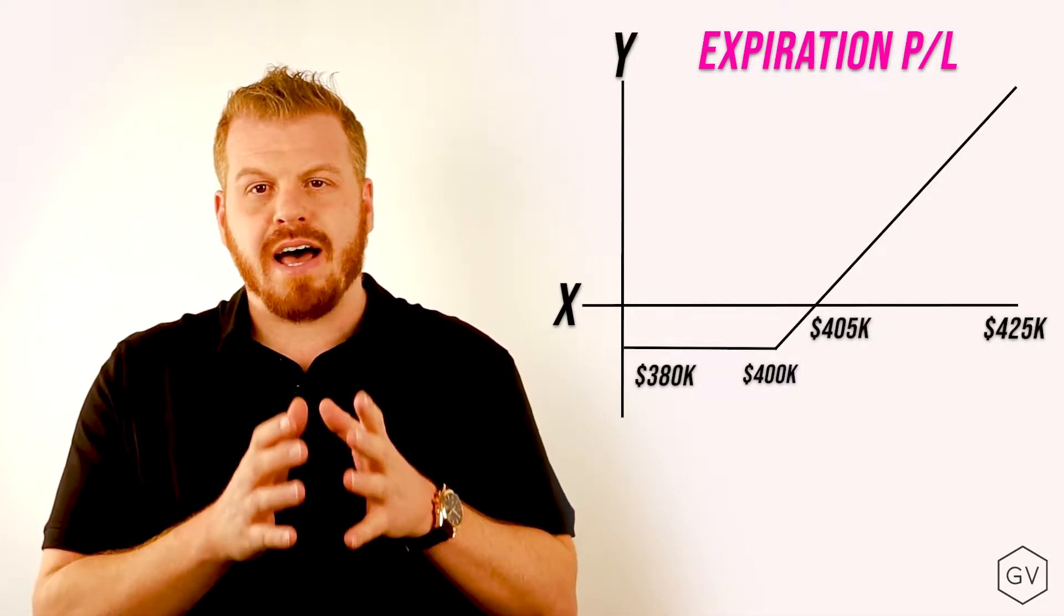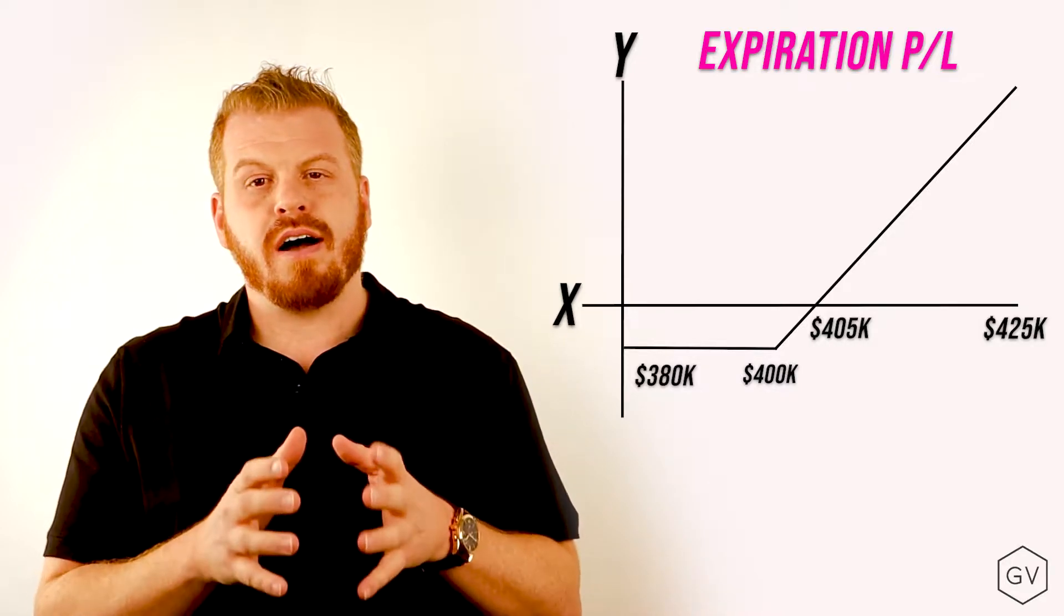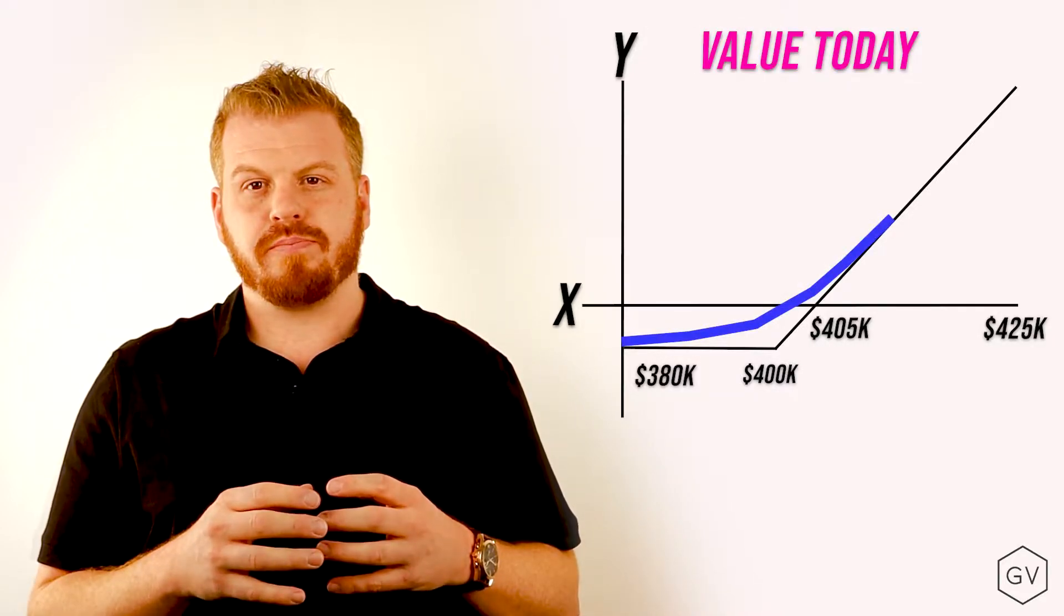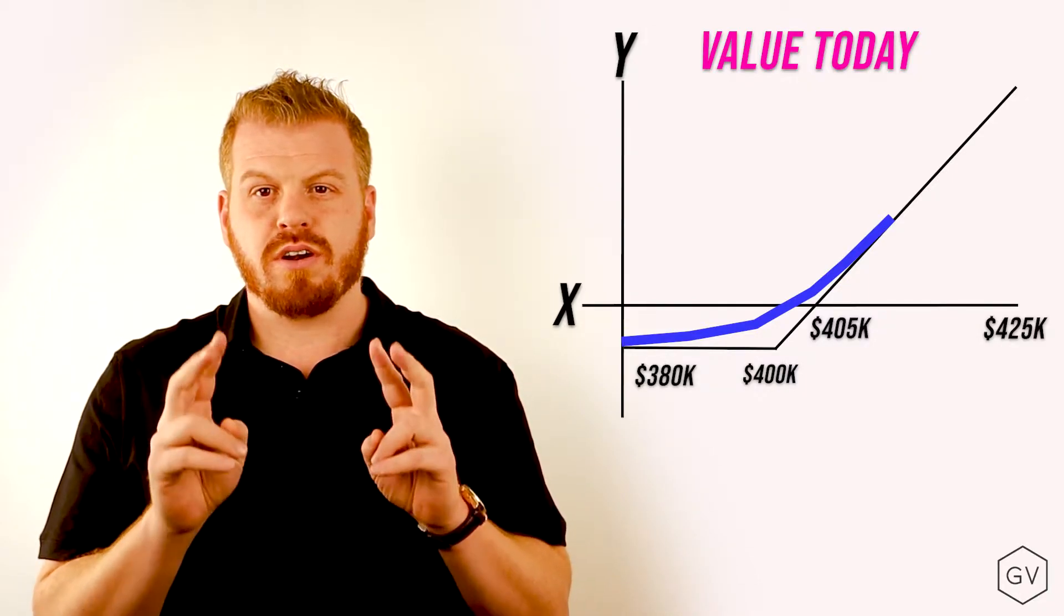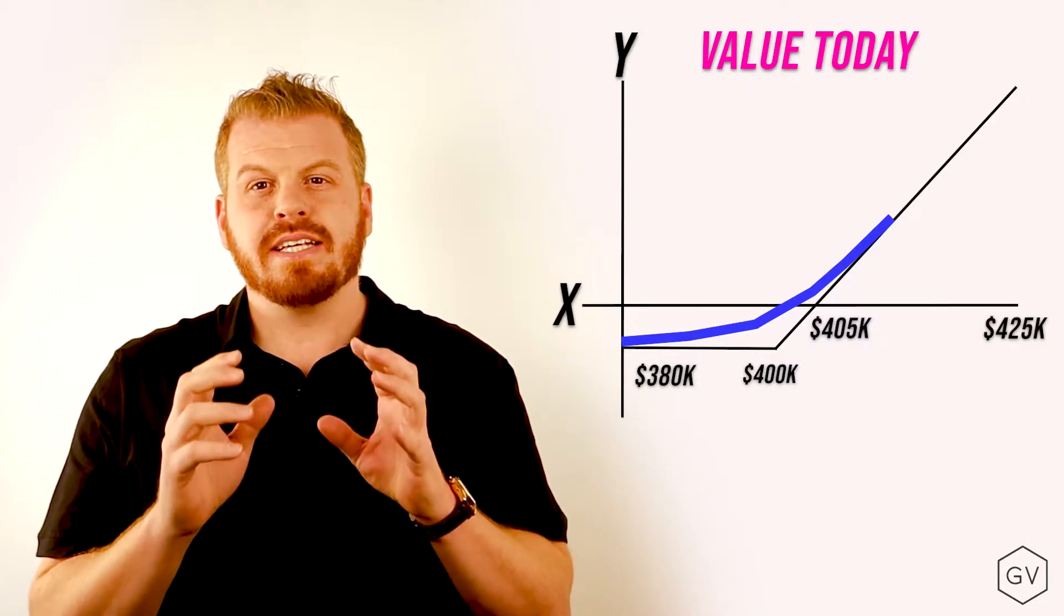So far in our video series, when we've talked about the profitability of options, we've done so in terms of the value at expiration, not the value before expiration. The Option Greeks help us understand how the expected value of options, or the theoretical pricing, is affected for changes in different variables.